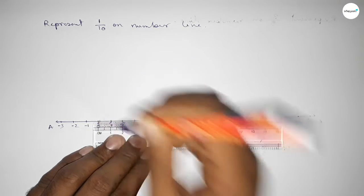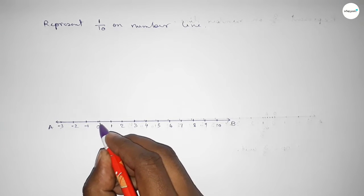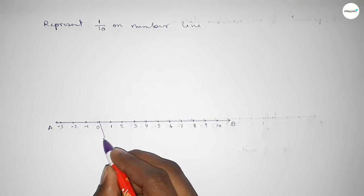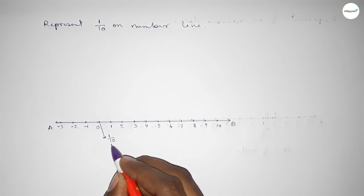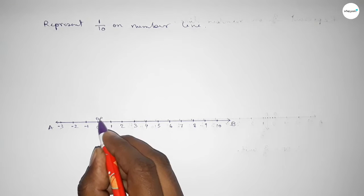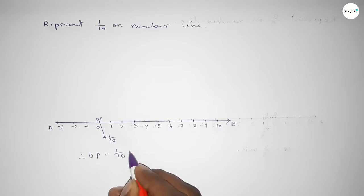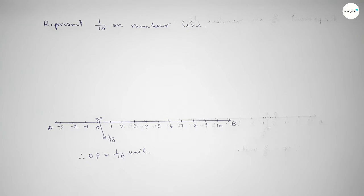is 0.1, so this is one over 10. So this is one over 10 on number line. This is O and here P, so therefore OP equals one over 10 unit. That's all, thanks for watching.